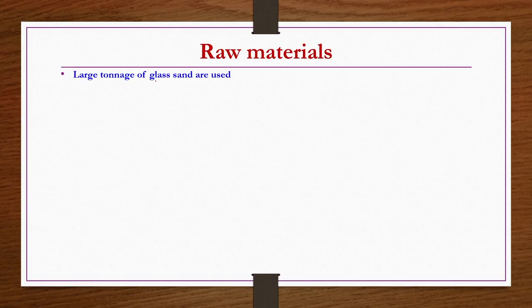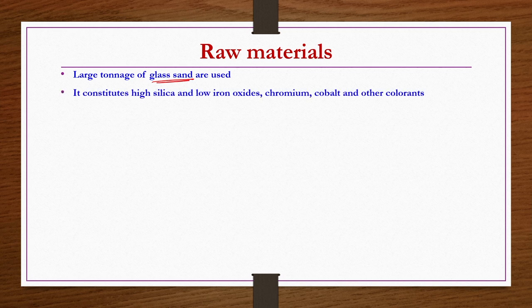Large tonnage of glass sand is used because it is very rich in silica and contains very low amounts of iron oxides, chromium, cobalt, and other colorants. You need silica, and glass sand is often used because it is very rich in silica.